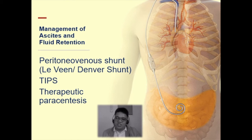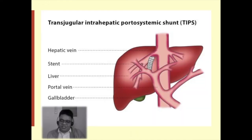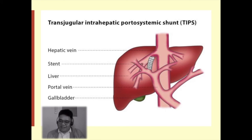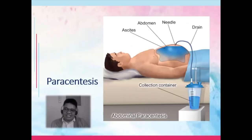TIPS — transjugular intrahepatic portosystemic shunt — is a shunt inserted in the veins of the liver, bypassing blood vessels to facilitate drainage of blood toward the inferior vena cava. Paracentesis involves extracting fluids from the abdomen to relieve pressure.